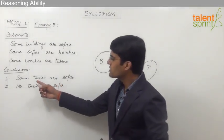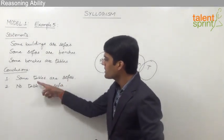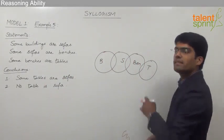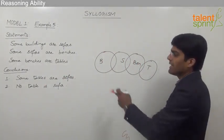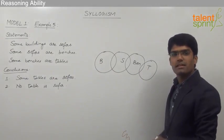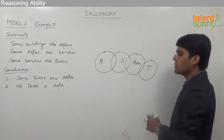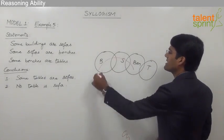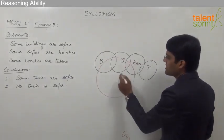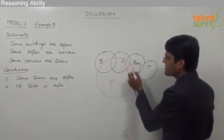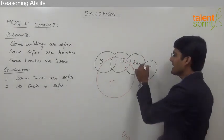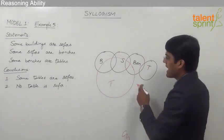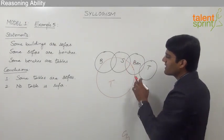The given conclusions are with respect to tables and sofas, so let us understand in what other ways the tables can be drawn. The last statement is 'some benches are tables'. In the basic diagram, tables are drawn as a separate region overlapping only benches, but in the alternative diagram, the benches which are tables are positioned differently — overlapping into the sofas region.